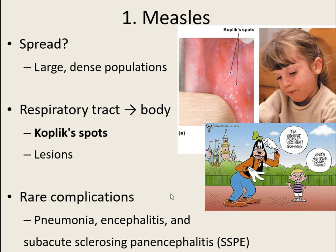Our first virus is measles. It is spread by respiratory droplets in large dense populations — coughing, talking, sneezing spreads it. It gets into the respiratory tract first, then spreads throughout the body. One unique characteristic used in diagnosis is Koplik spots: white spots with red irritation found inside the gums, which is a very unique outward sign of this particular virus.